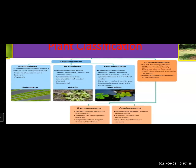The next division is Pteridophyta. These plants have well-developed root, stem, and leaves, and they have specialized tissues to conduct water. For reproduction they have spores — they reproduce with the help of spores. Examples: Marsilea, Pteris, Nephrolepis. These are the ferns included in Pteridophyta.